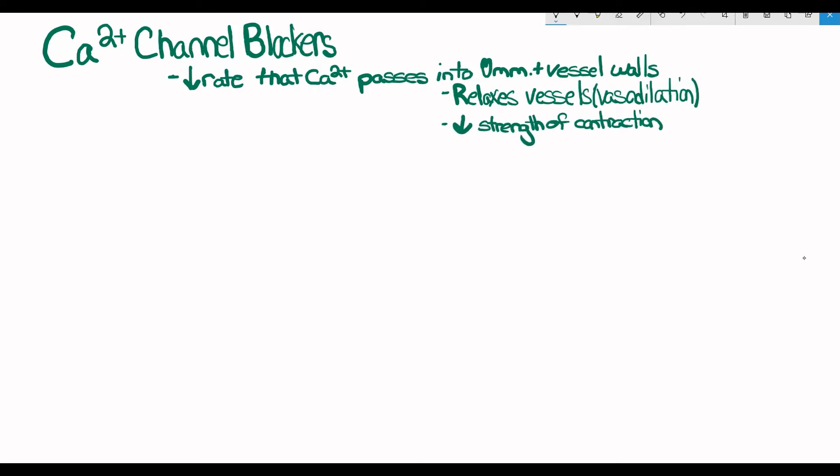Calcium channel blockers include nifedipine, verapamil, and diltiazem. They usually end in IPINE, and they decrease the rate that calcium passes into cardiac muscle and vessel walls, causing vasodilation and decreasing the strength of contraction. And some of them also reduce the electrical conduction within your heart, slowing down the heart rate. Like beta blockers, it's used to treat many other cardiovascular problems, including hypertension and arrhythmias like atrial fibrillation and paroxysmal supraventricular tachycardia. It's used to treat those ones because of its ability to decrease the heart rate.